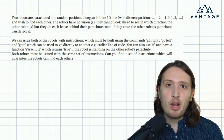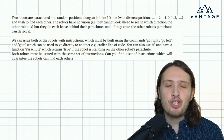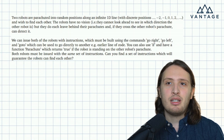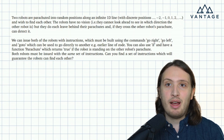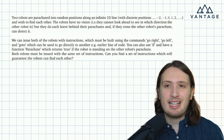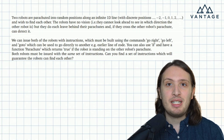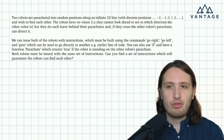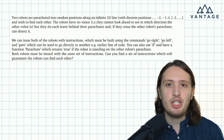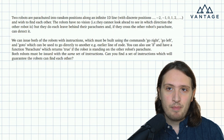So we have two robots; they're parachuted into random positions along an infinite 1D line. Although the line is like an x-axis, we're interested in discrete positions — so minus three, minus two, minus one, zero, one, two, three — integer positions. And the robots wish to find each other.